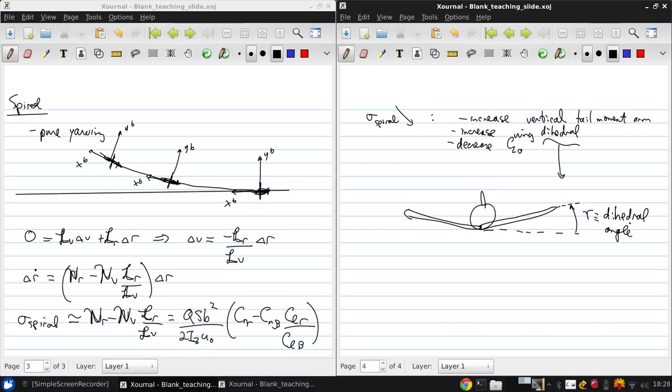Now the spiral eigenvalue scales approximately with the vertical tail area via CNR and CN-beta. So increasing the vertical tail size will either magnify the stability or the instability that's already present.